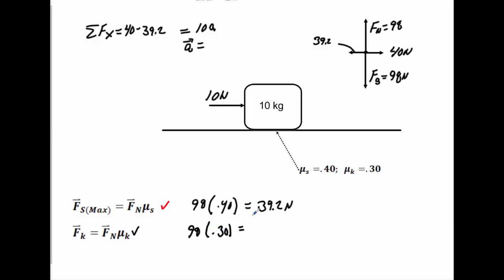We do that, 98 times 0.3 gives me a value of 29.4. So when you find your acceleration, you're not going to use the static, you're going to use the kinetic when it's sliding along. So now if I take 40 minus 29.4, I will get 10.6. So on this side here, I will get 10.6 newtons. And when I do that, 10.6 divided by 10, the object will immediately start to accelerate 1.06 meters per second squared to the right.